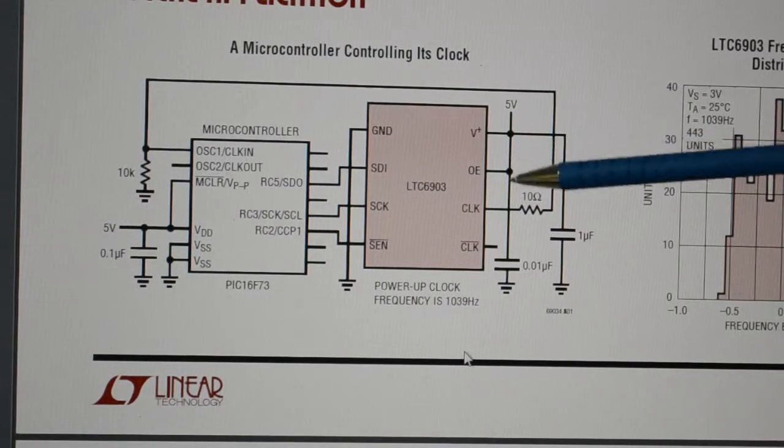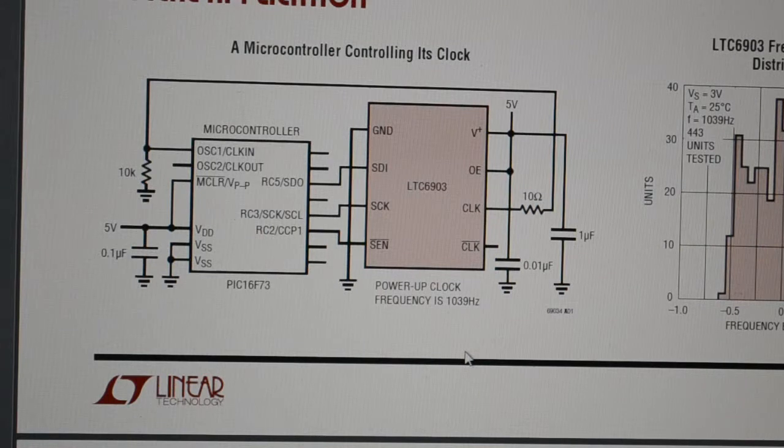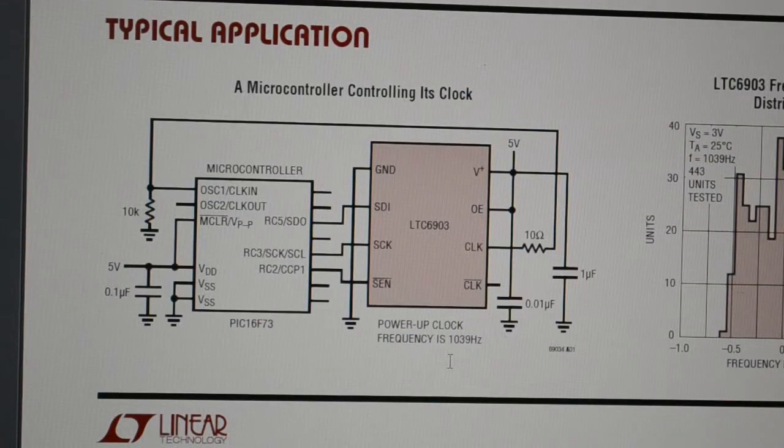So the OE is output enable, so you tie that high. And positive 2.7 to 5.5 volts.